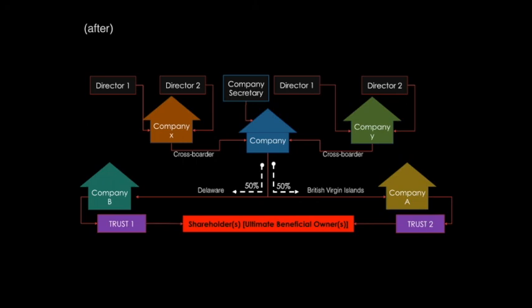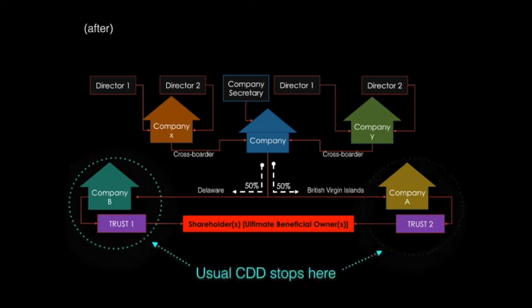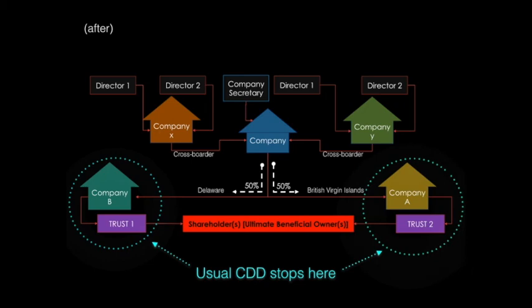Due diligence teams and compliance officers would typically classify their investigation as complete at the trust level, due to geographical locations and countries' secrecy laws — but this alone should ring alarm bells. You should question the levels of corporate structures and why a company would want to make it so complicated across multiple jurisdictions. Such a complex structure should create a red flag. Do not take the customer's word for anything.